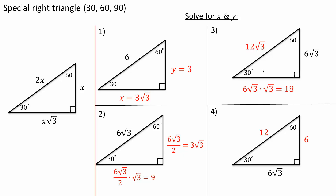And for the third problem. So they give us 6 square root of 3, which corresponds to 30 degrees. And we know that 90 degrees is double of it, so it would be 12 square root of 3. Likewise, 60 degrees would be this value times the square root of 3. So 6 times 3 is 18.